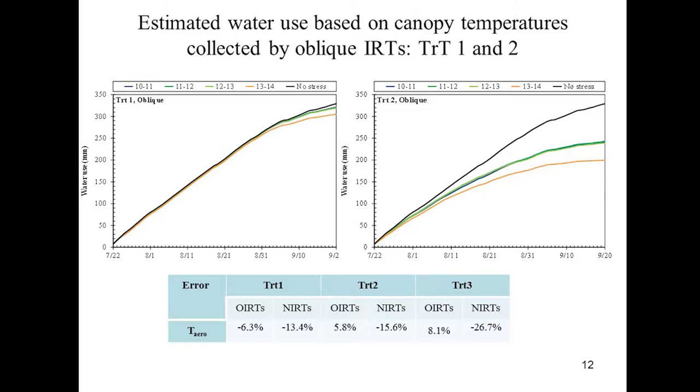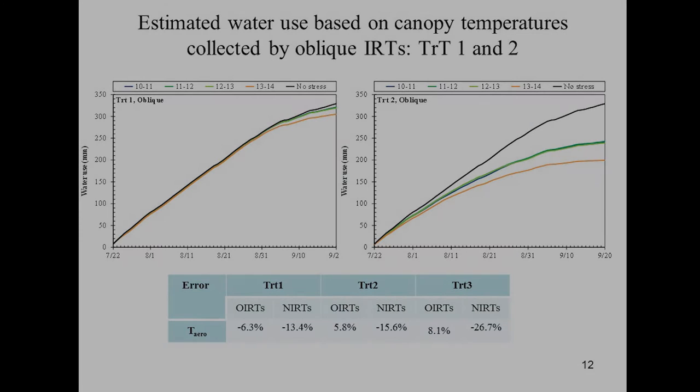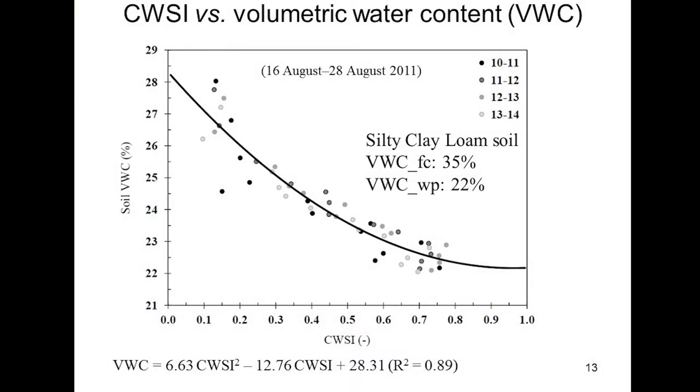We used one model based on the water energy balance and compared it to the soil water balance from a neutron probe. These are the errors comparing oblique versus nadir infrared thermometry. If an infrared thermometer looks straight down, you're seeing some background temperature, and depending on where you are in the growth cycle, you get larger errors — 13 to 26, almost 37 percent error — compared to 6 to 8 percent with the oblique approach. We also developed for soils in Ithaca a nice relationship between the crop water stress index and soil volumetric water content, which can perhaps be broken into two curves.